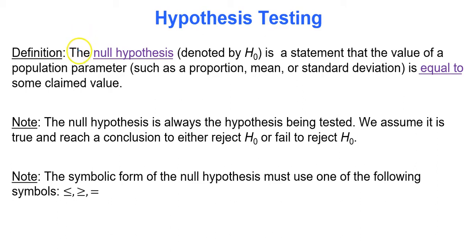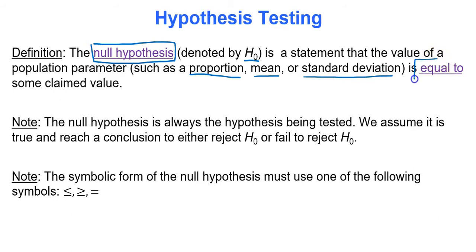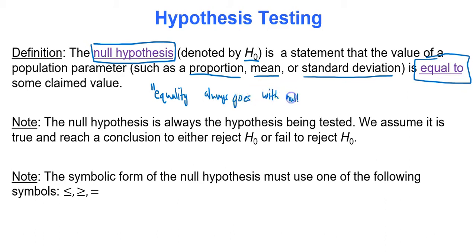You have two hypotheses when performing a hypothesis test, and it's always your first step to write them down. Your first hypothesis is called the null hypothesis, often abbreviated as H sub zero. It's a statement that the value of a population parameter — like a mean, proportion, or standard deviation — is equal to some claimed value. Equality always goes with the null hypothesis.